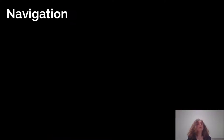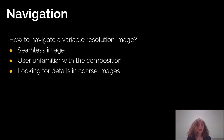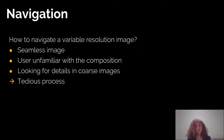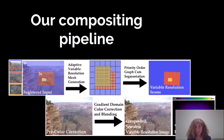There is another question we will try to answer: how to navigate the variable resolution image. The resulting image is seamless and the user is unfamiliar with the composition, so they'll be looking for details in coarse image regions, which is a serious problem if you don't know where the resolution is. We will answer how to apply a compositing pipeline as high quality as single resolution to variable resolution images.